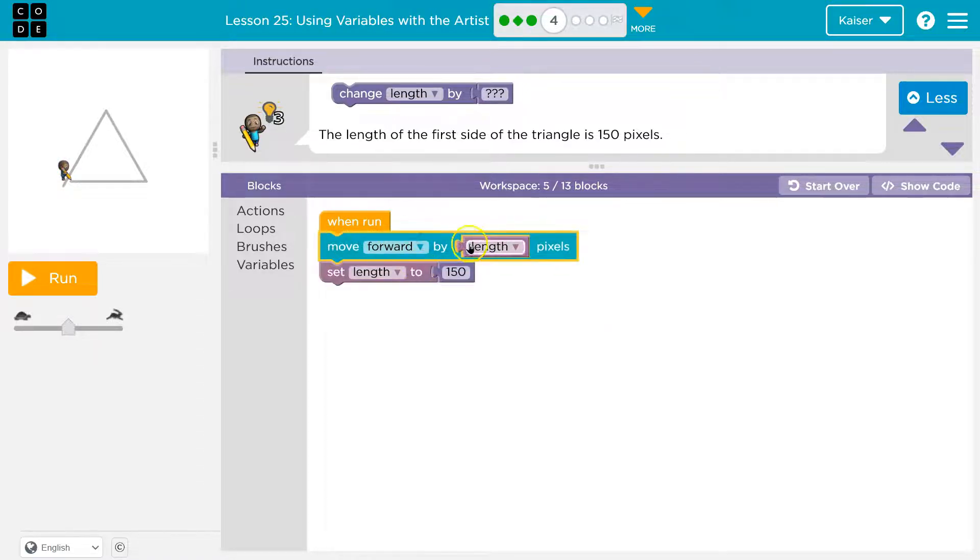Which is why if I do this, it won't work because the computer says code runs in order. And the computer says move forward by length. What is length? Looks above it. I don't know nothing. Then it goes down a line. Oh, length is equal to 150. But it would just keep going.